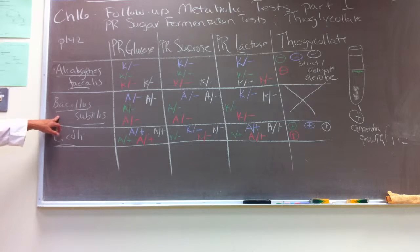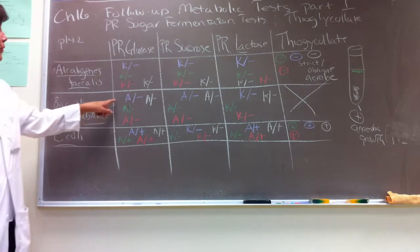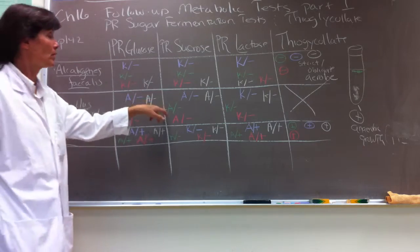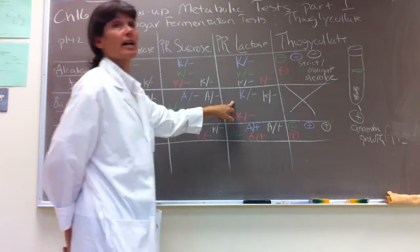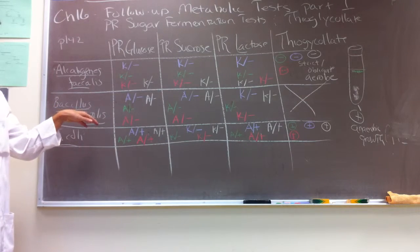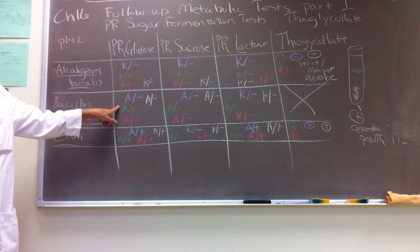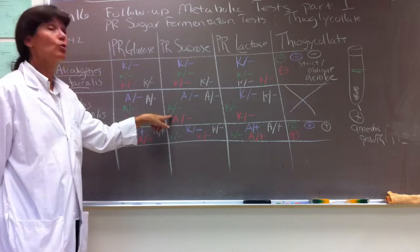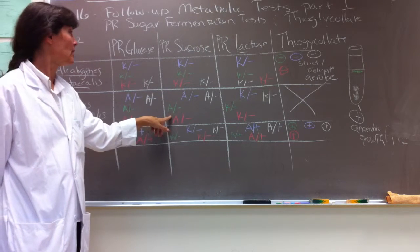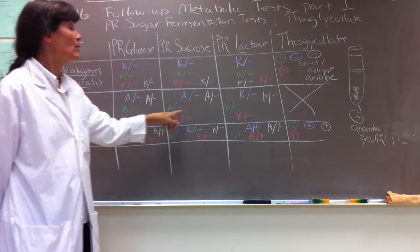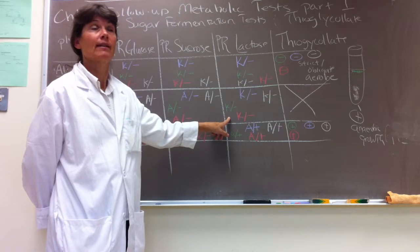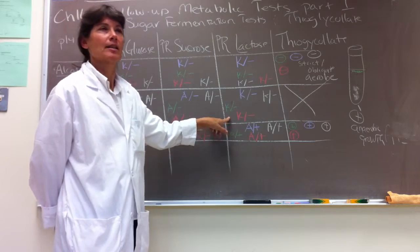The Bacillus subtilis results: we had acid production with glucose, acid production with sucrose, and no acid production from lactose. Our conclusion would be Bacillus subtilis has enzymes to ferment glucose, it has sucrase which permits it to ferment sucrose, but which enzyme does it lack? Why can't it ferment lactose? Exactly - beta-galactosidase.